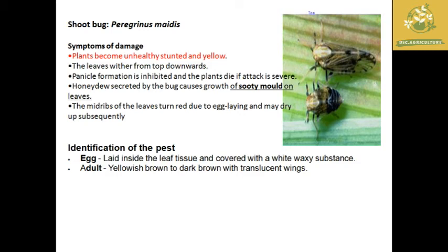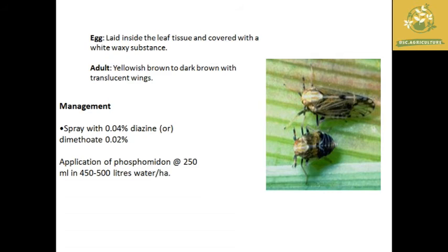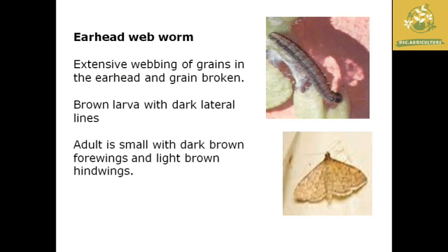Next is the shoot bug, whose scientific name is Peregrinus maidis. Infested plants become stunted and yellow, and they cause stunt mosaic disease on the leaves, leading to secondary infection by plant pathogens. The midrib of the leaf turns red due to egg laying and may dry up subsequently. Eggs are laid inside leaf tissues covered with a white waxy substance. The adult is yellowish brown to dark brown with translucent wings. Management includes spray of 0.04 percent diazinon, dimethioate at 0.02 percent, or phosphamidon at 250 ml in 450 to 500 liters of water per hectare.